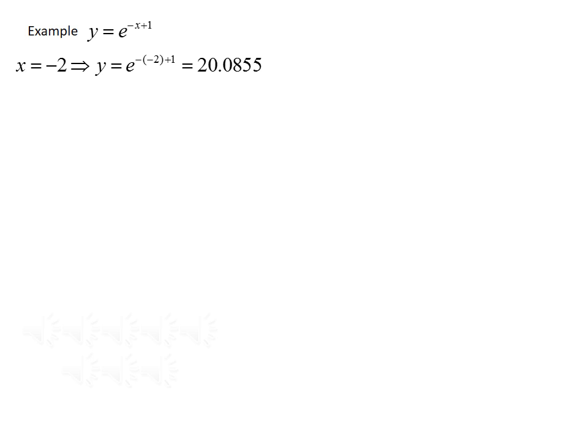Let's look at another example. This time we have y equals e to the negative x plus 1. Take a couple of minutes and see if you can sketch this graph by plotting points. To plot with points, we choose some random values of x. If x equals negative 2, we get y equals e to the negative negative 2 plus 1, which evaluates to 20.0855. If x equals negative 1, we get y equals e to the negative negative 1 plus 1, which simplifies to e squared, which is 7.389. If x equals 0, we get y equals e to the 0 plus 1, which simplifies to e to the 1, and that's 2.718.